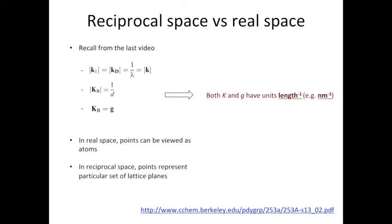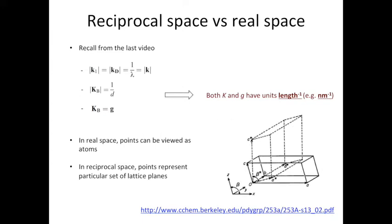Now let's imagine we have a unit cell in the real space. In the unit cell, the points can be viewed as atoms. However, if you view everything in the eyes of k and g, then you are seeing the world in the reciprocal space. In reciprocal space, the points you see in the unit cells or in the lattice, they actually represent a particular set of planes.